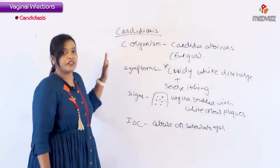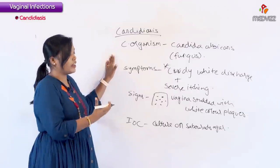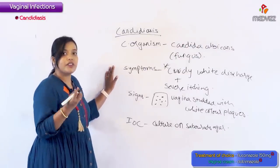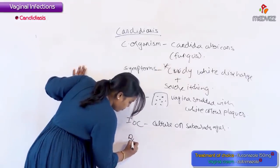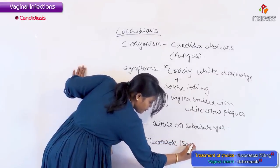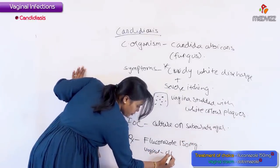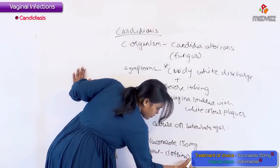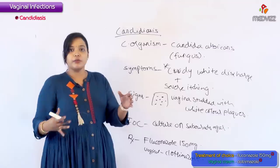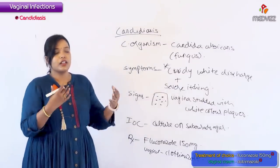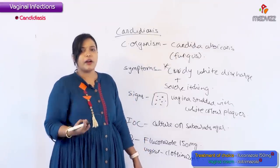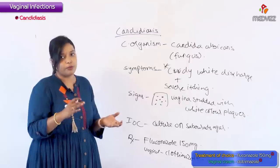The treatment for candidiasis is mainly azoles, as it is a fungal infection requiring antifungals. The oral drug given is fluconazole 150 mg stat. Vaginal tablets and creams are also available; the vaginal cream used is clotrimazole. For MCQ purposes: if fluconazole is an option, go for fluconazole; if not, go for clotrimazole. If both are absent, choose antifungals from the azole group.